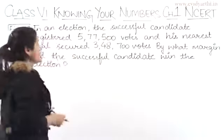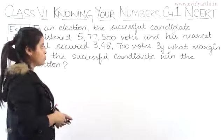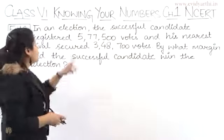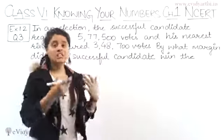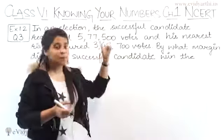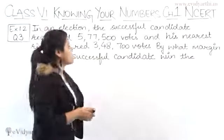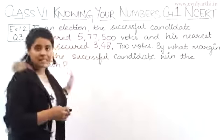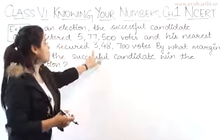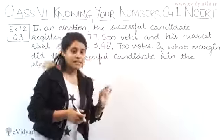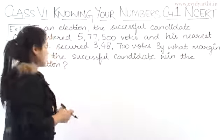In this question we have: in an election, the successful candidate registered 5,77,500 votes. And his nearest rival secured 3,48,700 votes. By what margin did the successful candidate win the election?